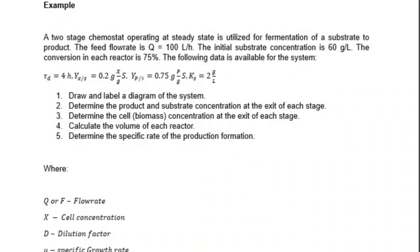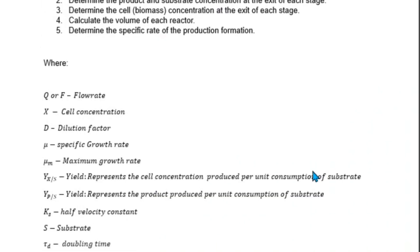Let's clarify what each variable represents. Q or F is the flow rate. X is the cell concentration. D is the dilution factor. µ is the specific growth rate. µM is the maximum growth rate. Y_XS is the cell concentration produced per unit consumption of substrate. Y_PS is the product produced per unit consumption of substrate. Ks is the half-velocity constant. S is the substrate, and TD is the doubling time.